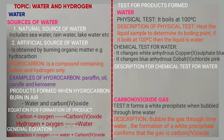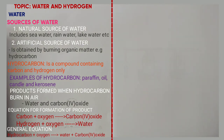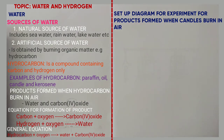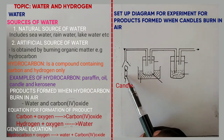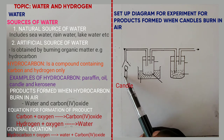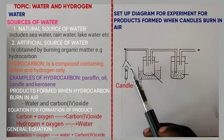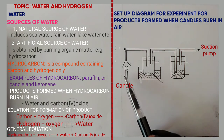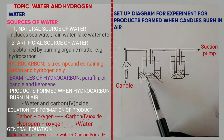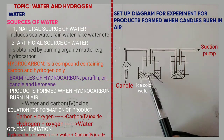The diagram below shows an experiment of the products formed when a candle burns in air. In this experiment, the candle contains carbon and hydrogen. So when the candle burns, it forms water and carbon dioxide. The two products will be sucked by the suction pump. They pass through the first stage — ice-cold water. The ice-cold water condenses the water vapor formed into liquid water.